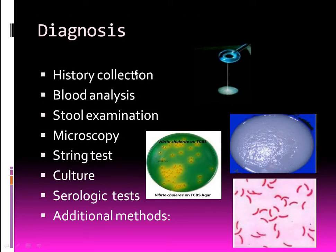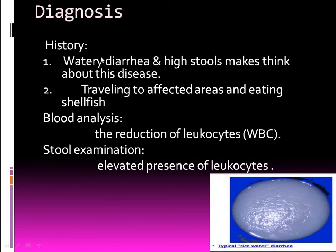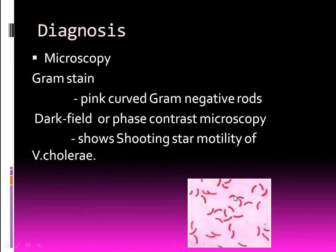Diagnosis: cholera is diagnosed by history collection, stool examination, microscopy, string test, culture, serological test, and additional methods. In history, patients report watery diarrhea; we also ask about outing plans and eating habits. In blood analysis, WBC (leukocyte) level is reduced. In stool examination, leukocyte level is elevated. On microscopy, a pink curved gram-negative rod is seen on Gram stain, and dark-field microscopy shows shooting-star-like motility.